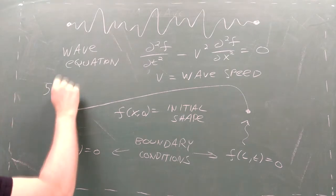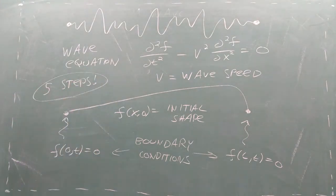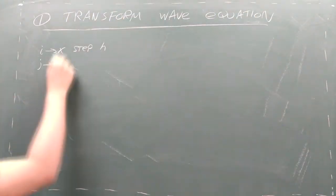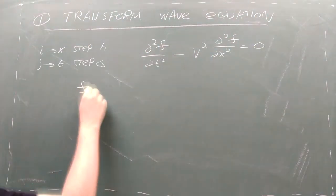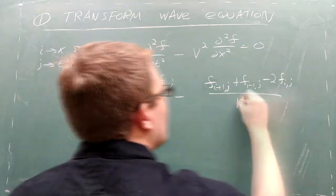We can model the resulting behavior with finite differences if we follow five steps. First, we transform the wave equation into a difference equation using i as an index for x values and j as an index for t values.